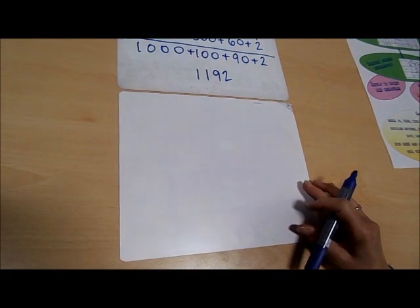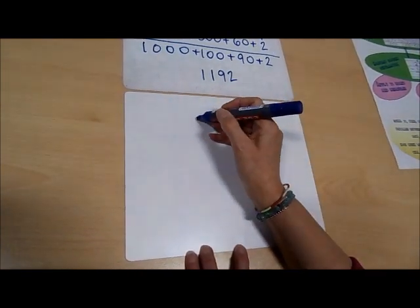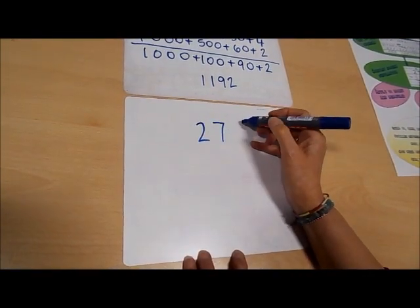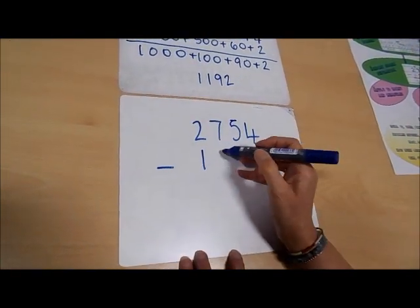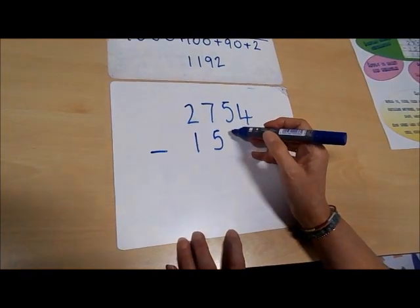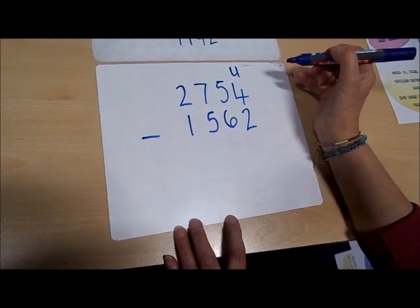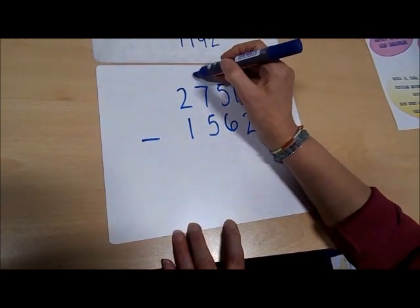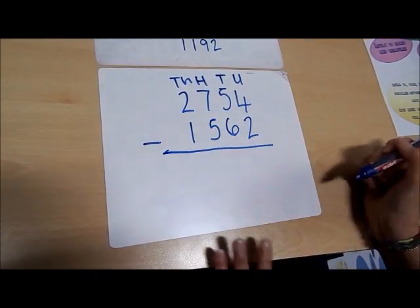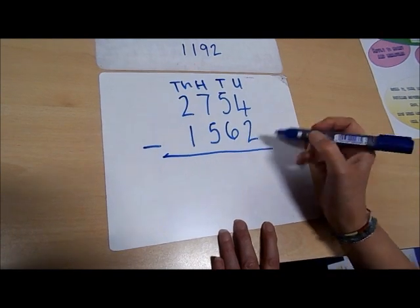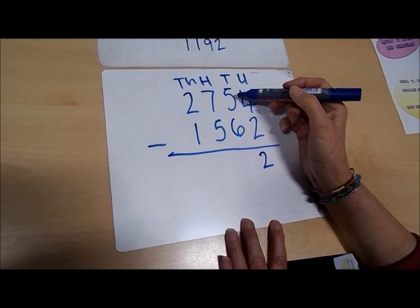Using the compact column subtraction method, we have 2,754 and we're going to take away 1,562. We set up our columns: units, tens, hundreds, and thousands. Four take away two is two.